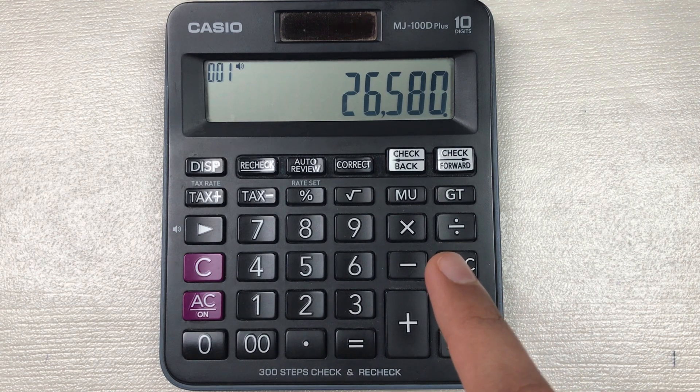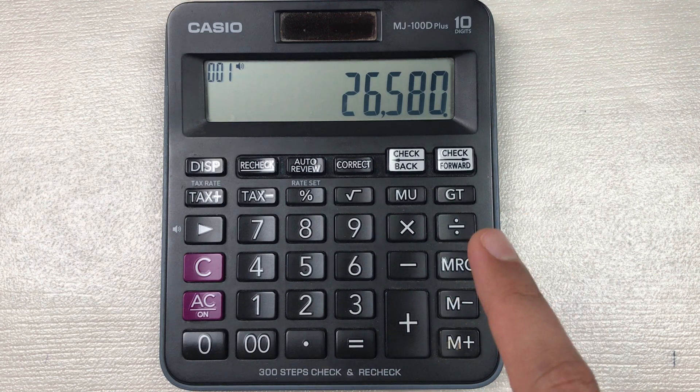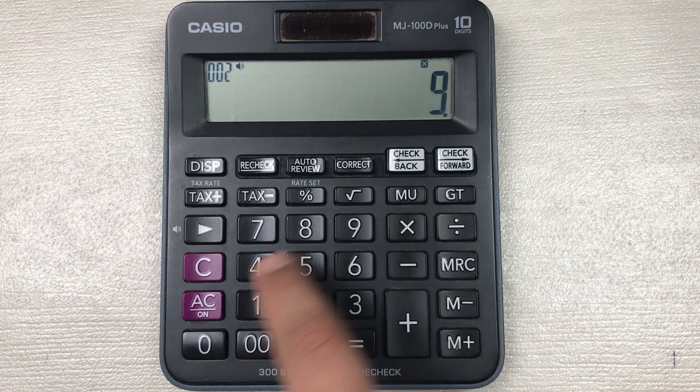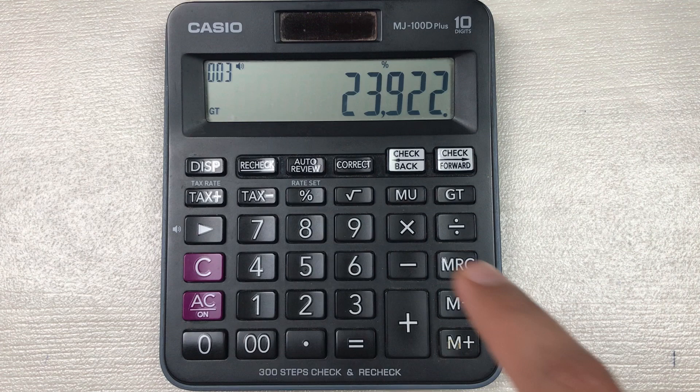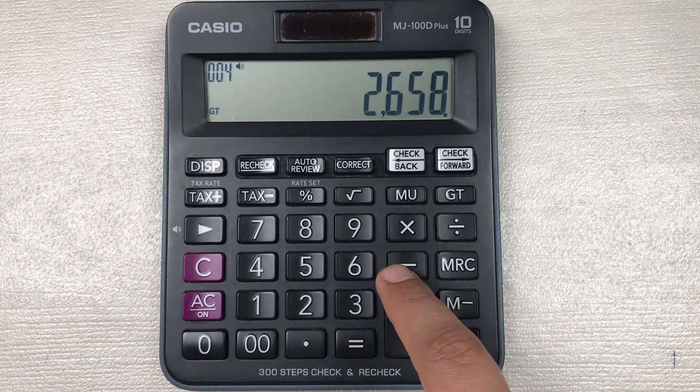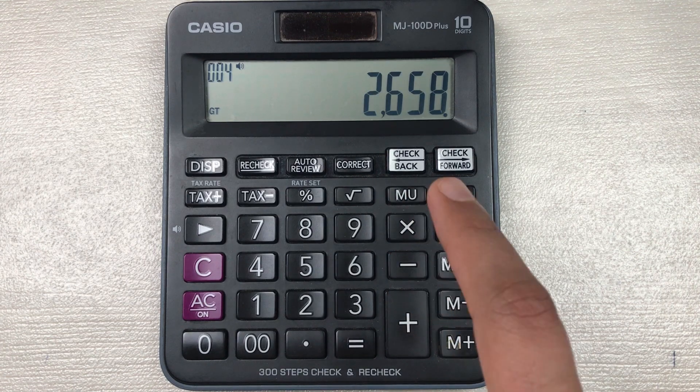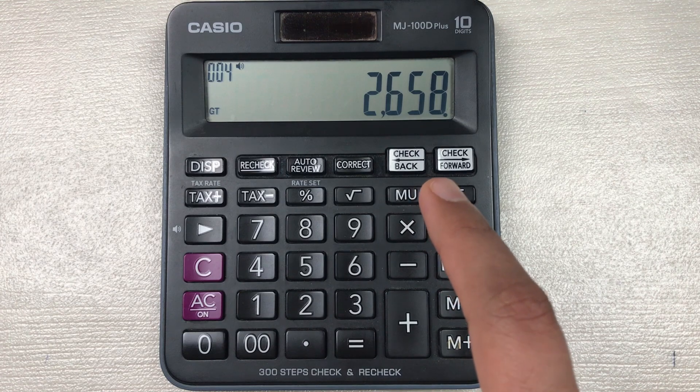You multiply it with 90, then you press this percentage button, and then in the last you press this minus button. So here is the final answer: 2658 is the final price after 90% off.